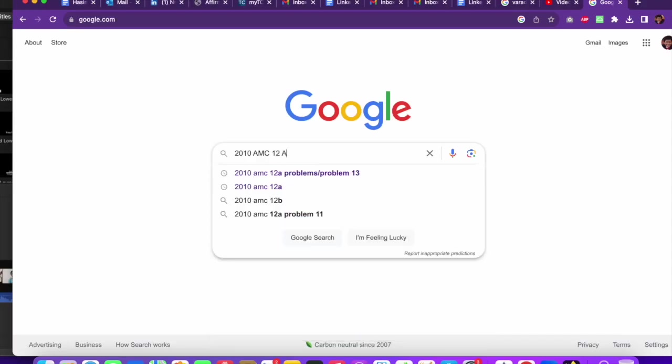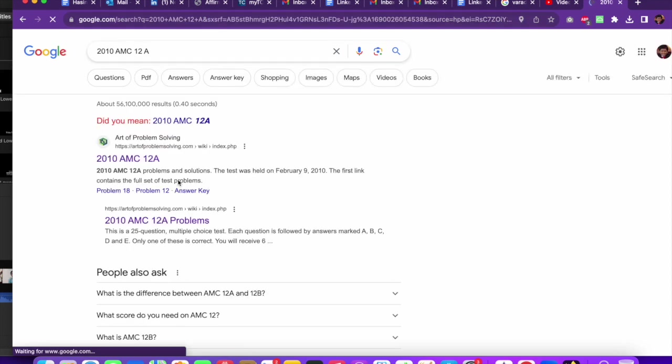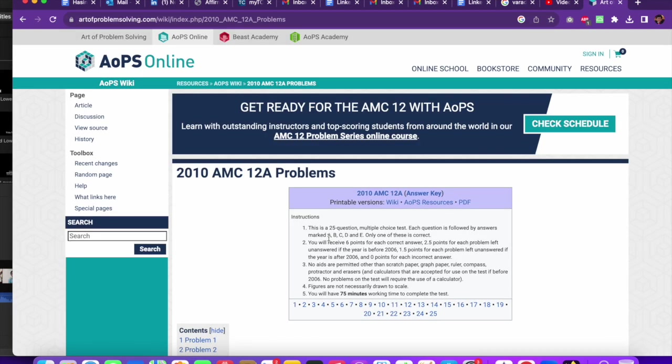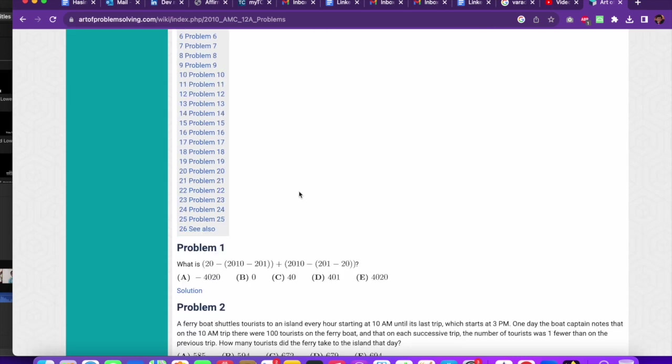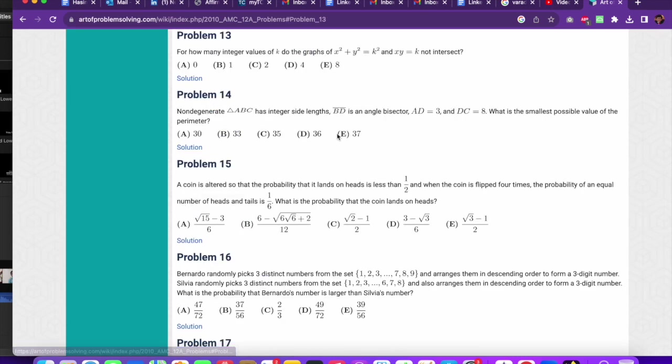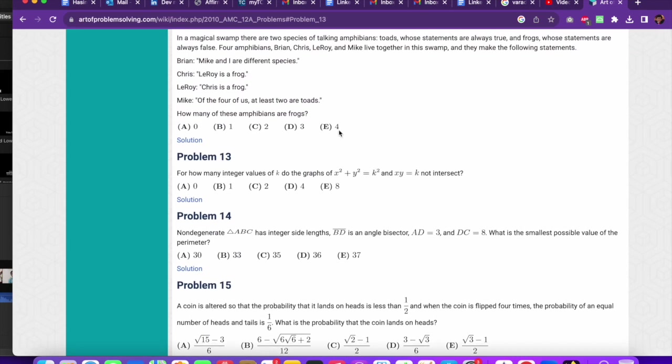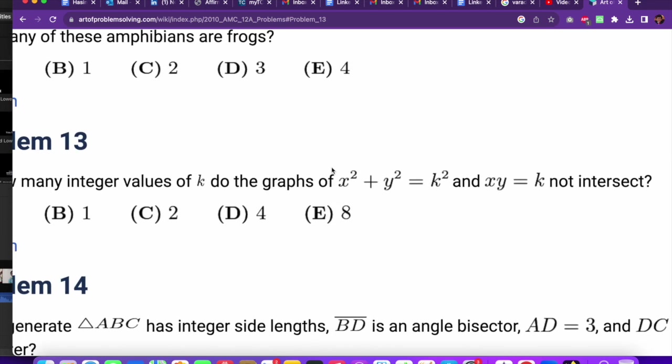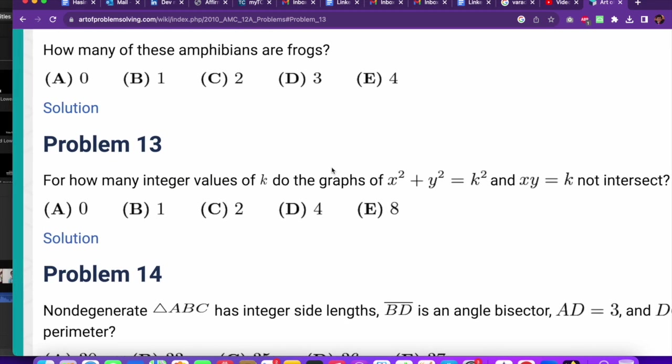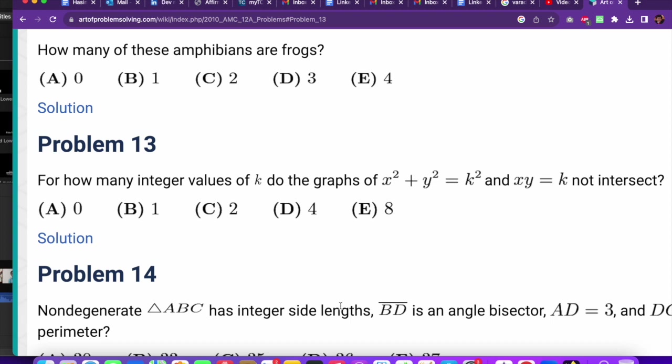2010 AMC 12A. So, what's the problem? Let's go into problem 13. For how many integral values of k do the graphs of x squared plus y squared equals k squared and xy equals k not intersect?